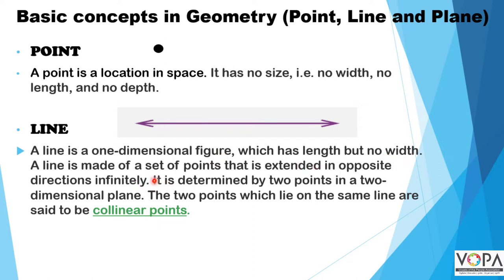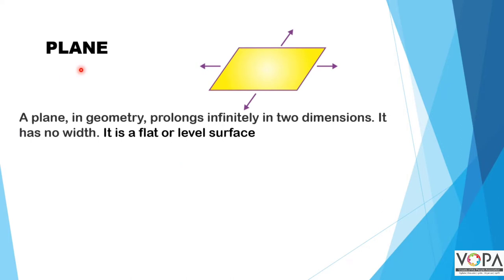A line is made up of a set of points that is extended in opposite directions infinitely. It is determined by two points in a two-dimensional plane. The two points which lie on the same line are said to be collinear.